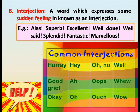Interjection. A word which expresses sudden feeling is known as an interjection. Examples: Alas! Superb! Excellent! Well done! Well said! Splendid! Fantastic! Marvellous!